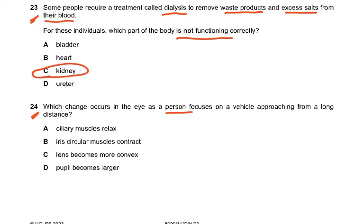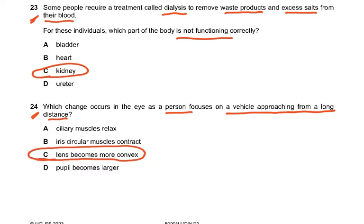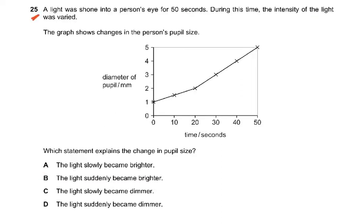Question 24: Which change occurs in the eye as a person focuses on a vehicle approaching from a long distance — meaning it's coming nearer to you? The answer is C: the lens becomes more convex. When the ciliary muscles relax, the lens becomes less convex. The iris circular muscles only act with bright or dim light. This question is about accommodation — the object is coming near, so the lens becomes more convex.